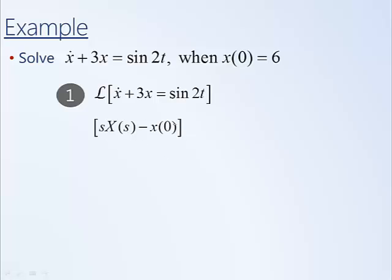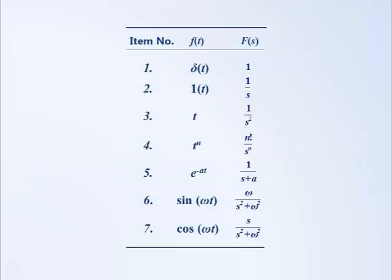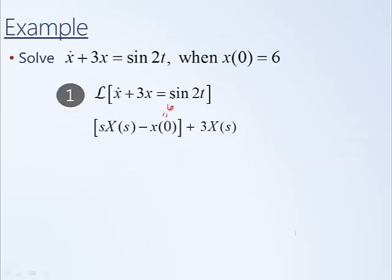This is the multiplication by s. There is also another term due to the initial condition, which in this case we are told is equal to 6. We can split the Laplace transform over addition, so we take the Laplace transform of the next term where the 3 is just a constant and comes out front. The Laplace transform of x of t is simply X of s. We take the Laplace transform of the sine function from our tables, where our sine function is 2 times t, so omega equals 2, giving a solution of 2 divided by s squared plus 2 squared.